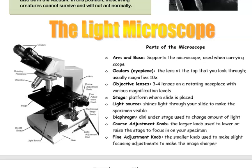The stage is the flat platform where you place your slide. The light source is underneath the platform and it shines light up through your slide. The diaphragm is a dial under the stage used to change the amount of light, so you can make it brighter or dimmer.